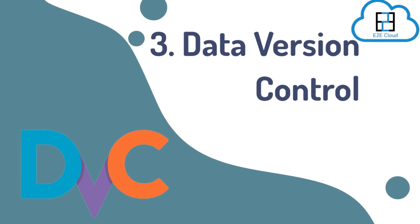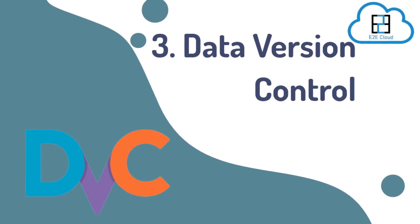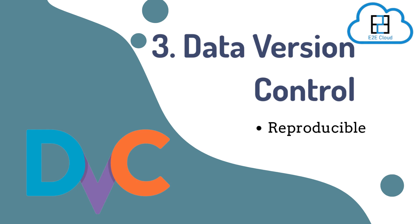DVC is an open-source data science and machine learning application built in Python. It uses a Git-like paradigm to handle datasets and machine learning models, as well as versioning them. It makes machine learning models reproducible and shareable. It's built to work with huge files, data sets, machine learning models, metrics, and code.